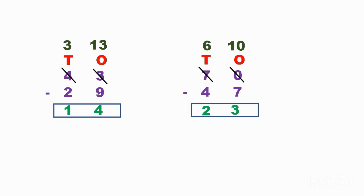We have to be very careful: when the top number is smaller and the bottom number is greater, we cannot subtract — we have to borrow. Go to the tens place and borrow one ten — it is ten only. Add that ten to the ones place, then subtract. And remember, one is less in the tens place after borrowing. Follow these steps and do the sums.